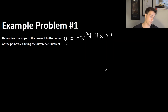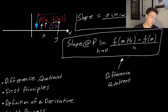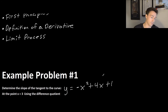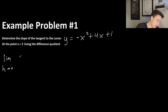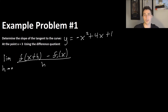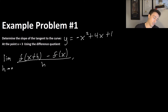Now for our first example problem: determine the slope of the tangent to the curve at the point x = 3 using the difference quotient. We'll rewrite the difference quotient using x's instead of a's: the limit as h → 0 of [f(x+h) − f(x)] / h. This gives us the instantaneous rate of change — the slope of the tangent to the curve. We're going to use first principles to solve this at x = 3.